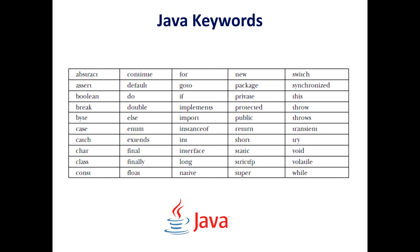The keywords include: abstract, assert, boolean, break, byte, case, catch, class, const, continue, default, do, double, else, enum, extends, finally, float, for, goto, if, implements, import, instanceof, int, interface, long, native, new, package, private, protected, public, return, short, and static, among others.